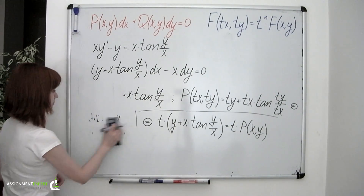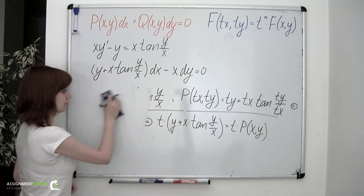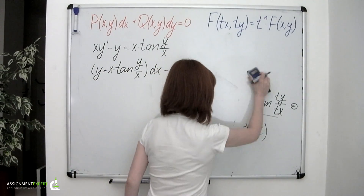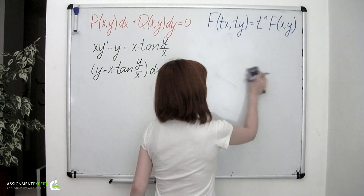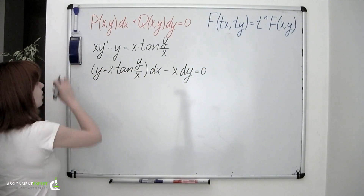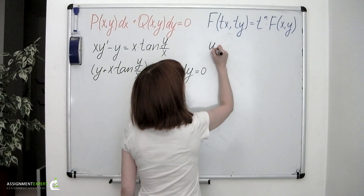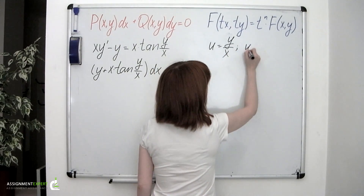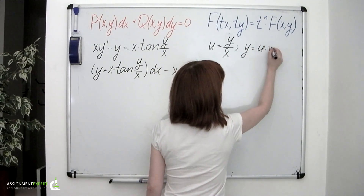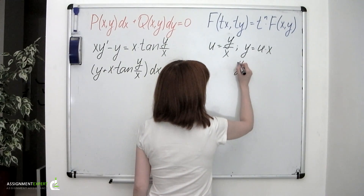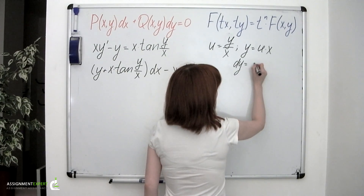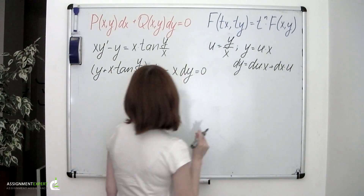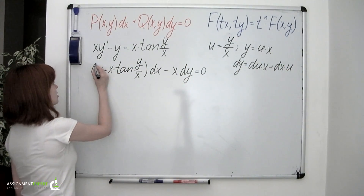And we move on to step 3. We make a substitution: u equals y over x, so y equals u times x, and dy is found as du times x plus dx times u.